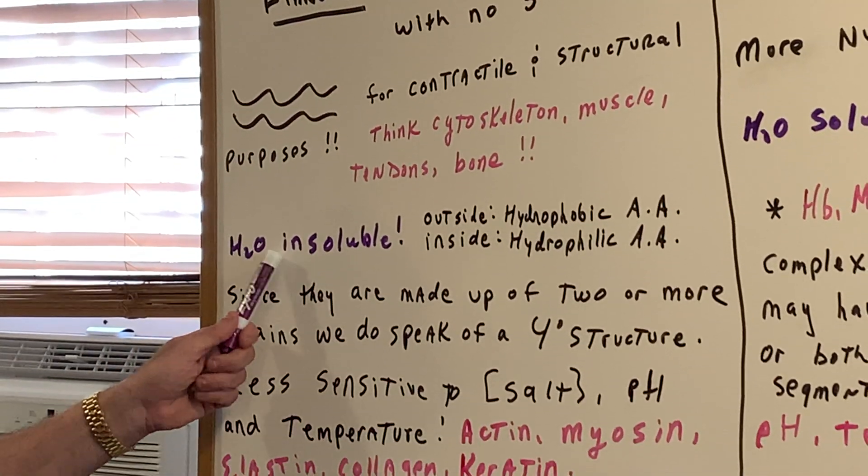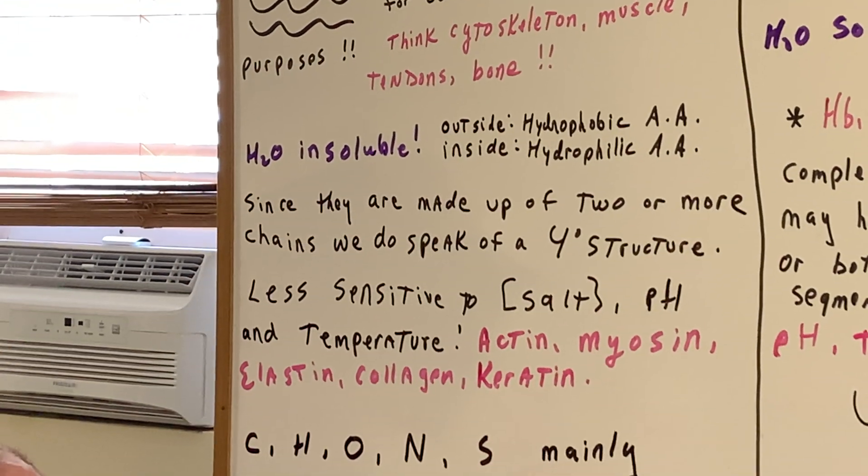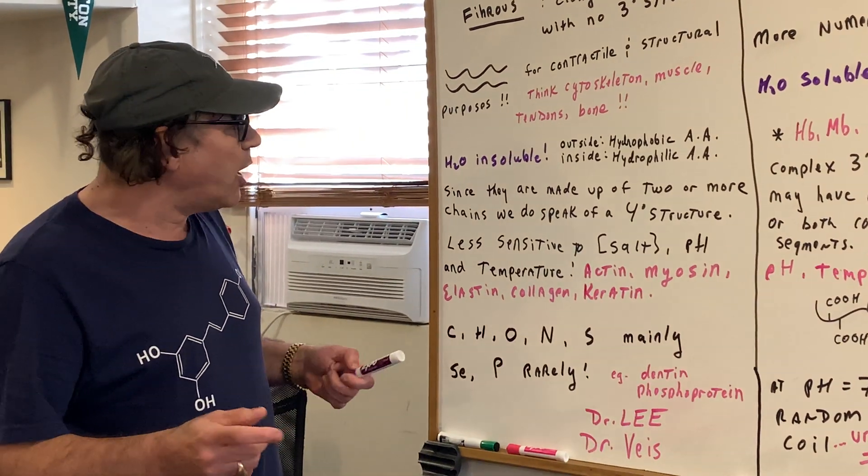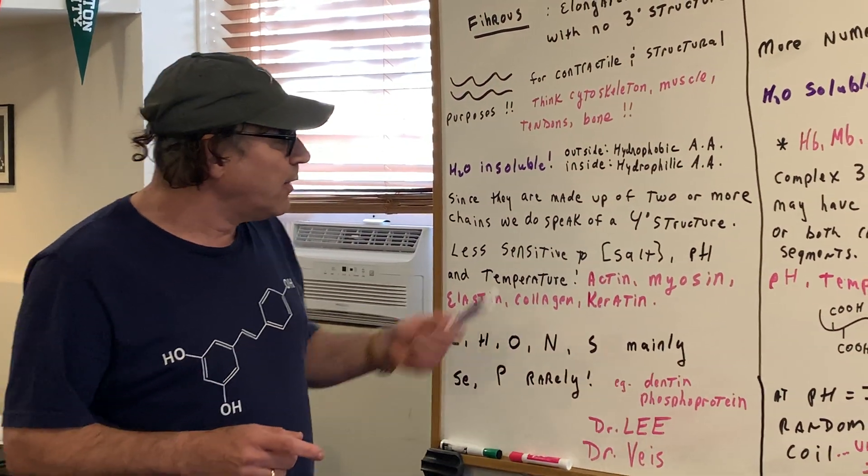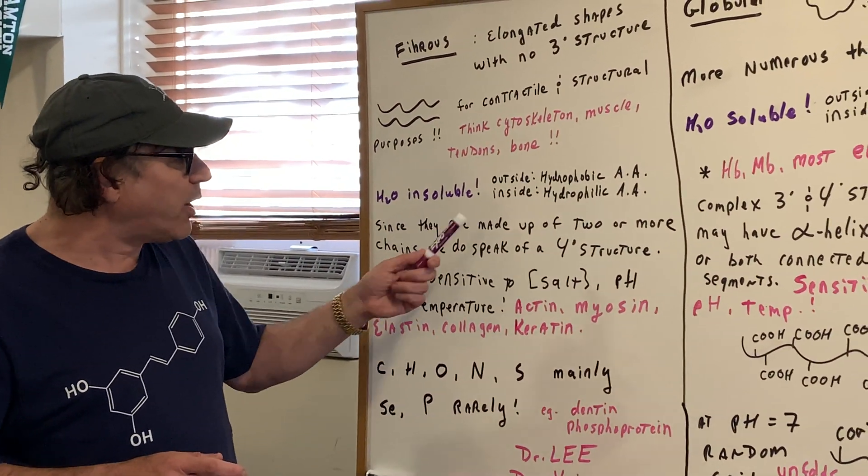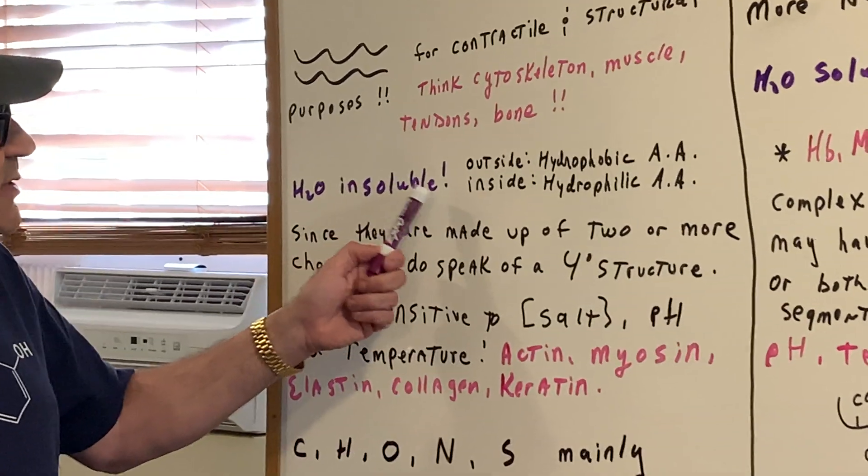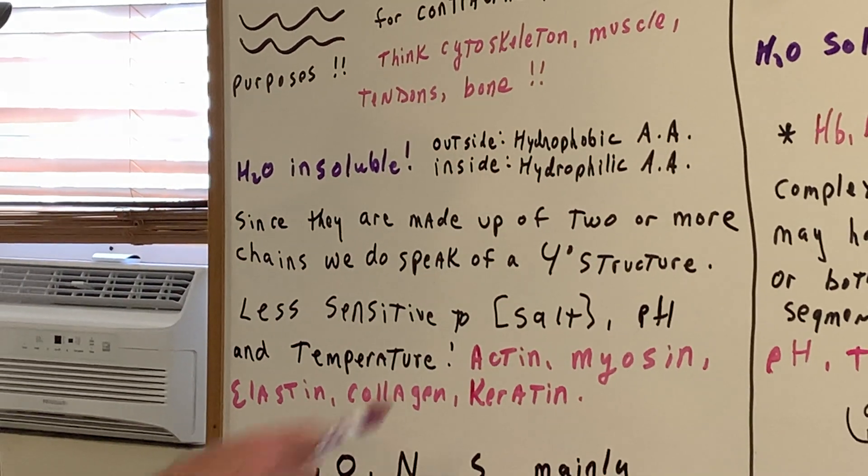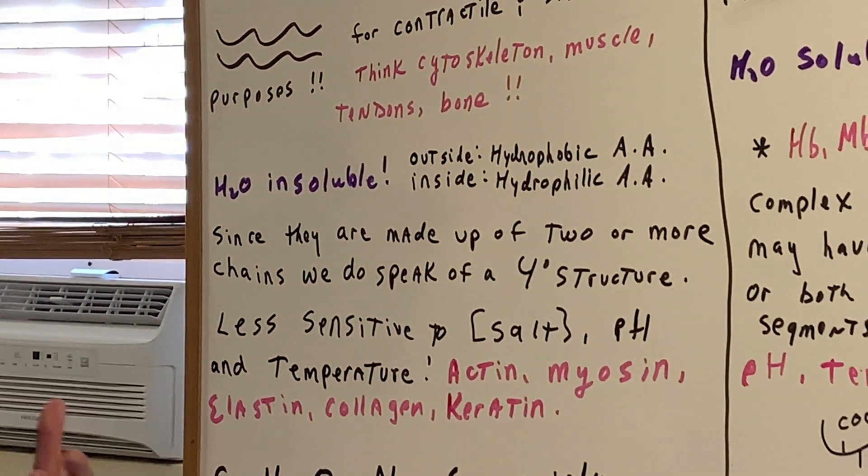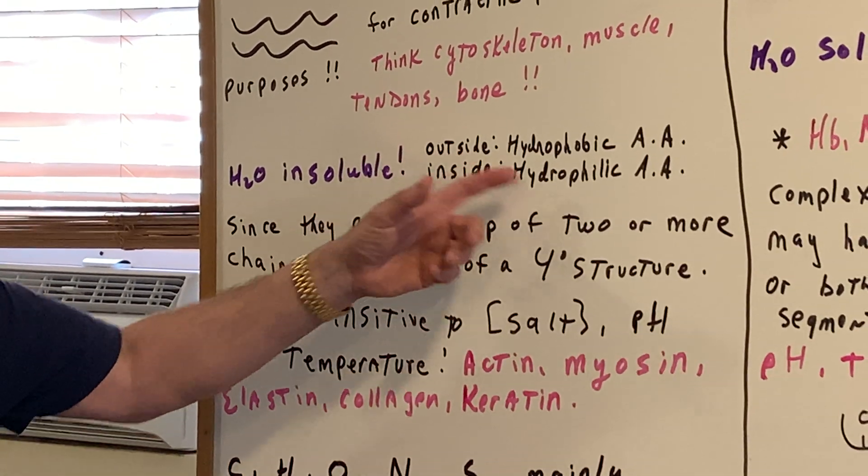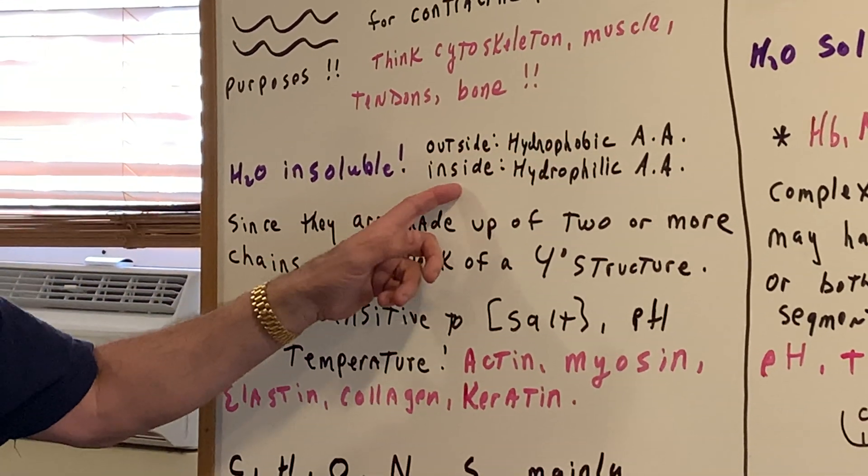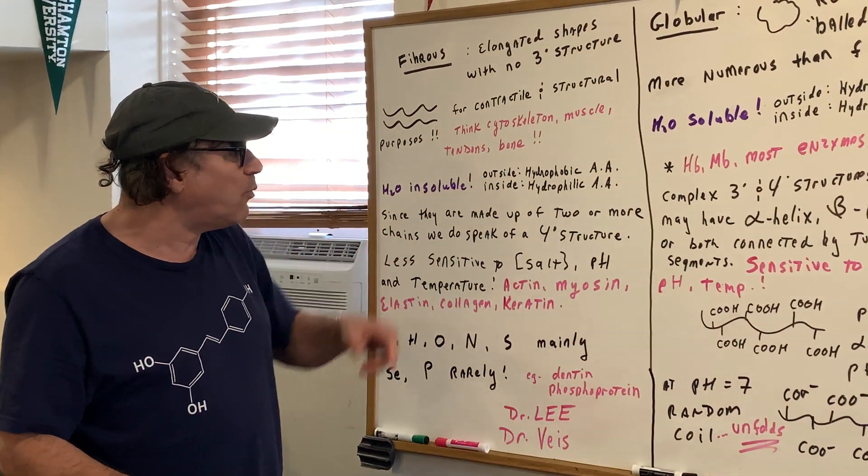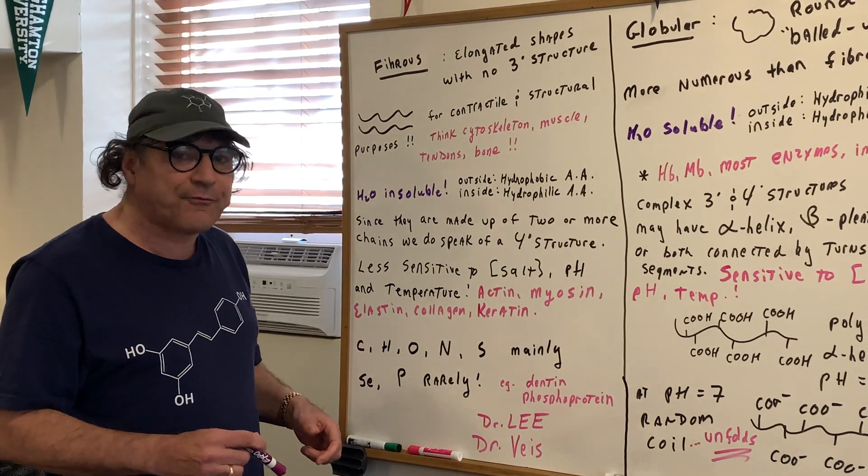Now if it's a fibrous protein, it's water insoluble. Water insoluble for a fibrous protein means the outside of the molecule is hydrophobic in nature. So the amino acids making up the outside portion is hydrophobic. On the inside would be hydrophilic. And that makes sense if it's insoluble in water - the outside should be hydrophobic.